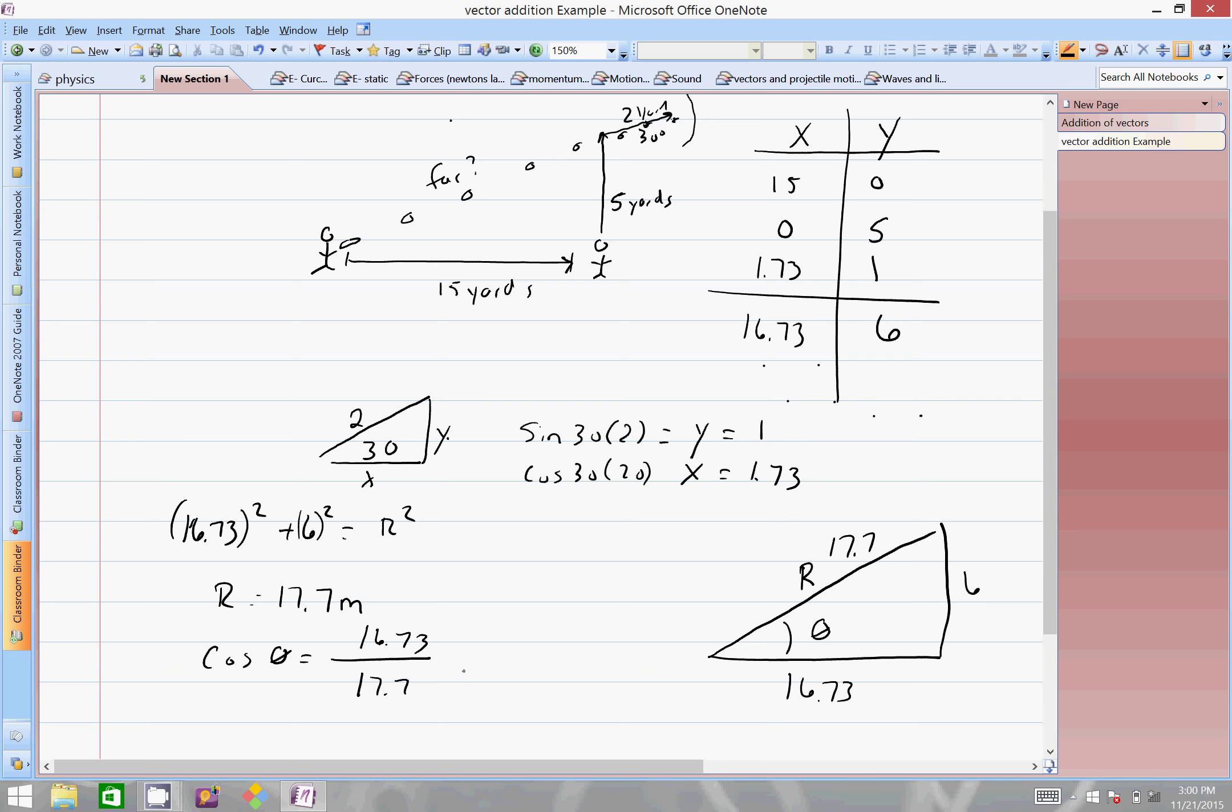Let's use the cosine function, so the cosine of the angle equals the adjacent over the hypotenuse, which is going to be 16.73 over 17.7. And this angle is... that is 0.93.